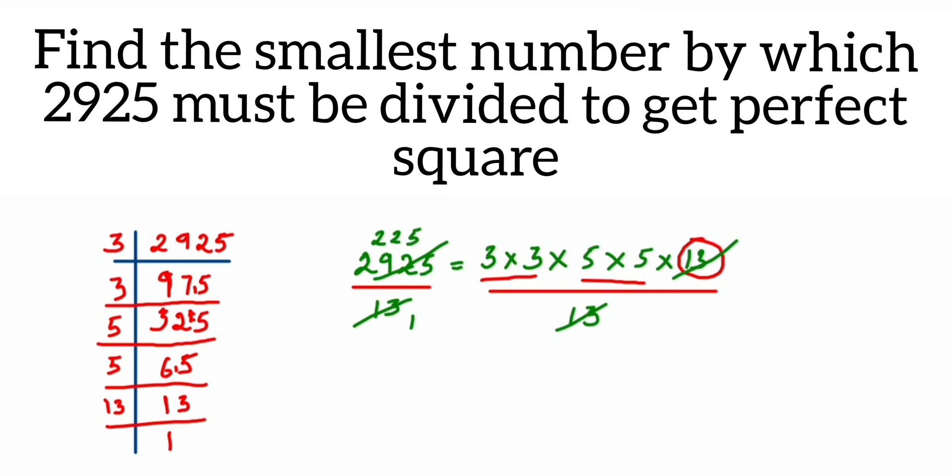And 225 can be written as whatever you have on the right-hand side. Just write it down again: it's 3 into 3 and 5 into 5. So you can see now we have an exact pair of 3 and 5.